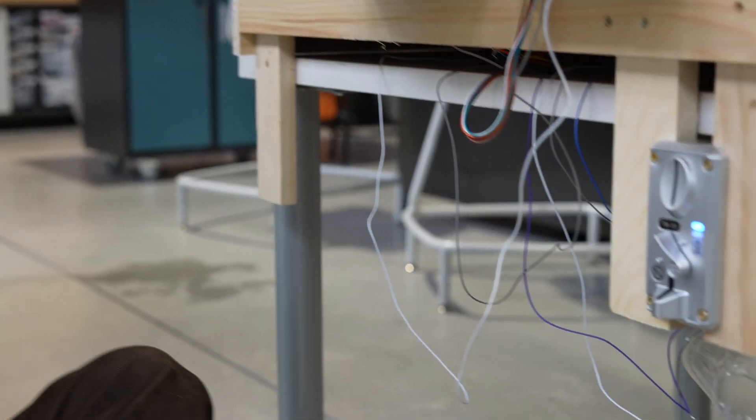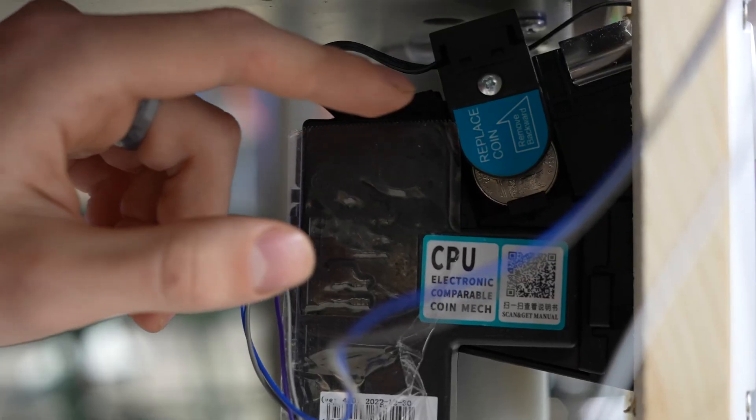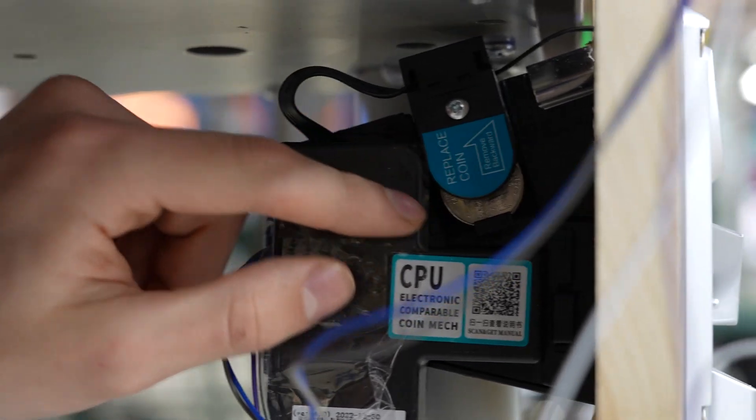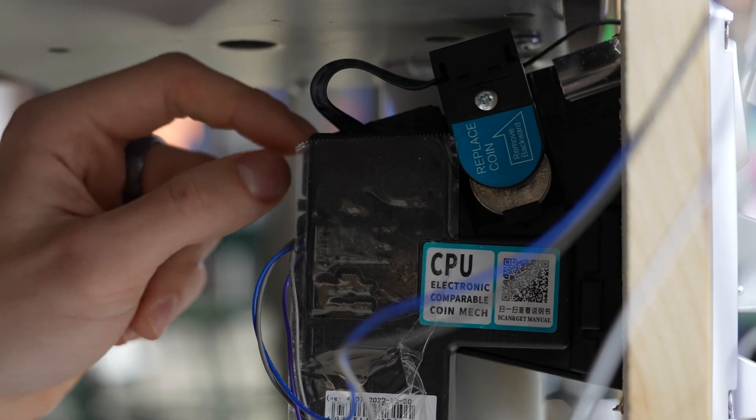The coin comparator, I mentioned it earlier as a really awesome piece of machinery. I'm gonna have to get under this machine. The electronic coin comparator is a really awesome component because it takes a coin and then compares it to another coin that gets passed through.